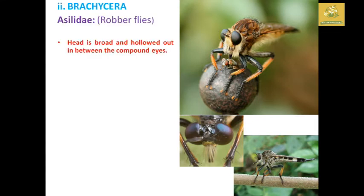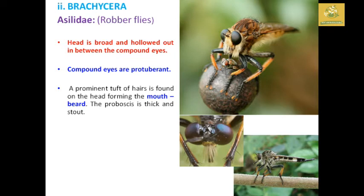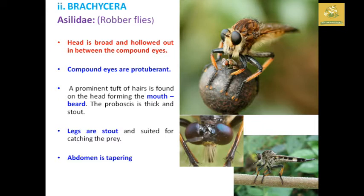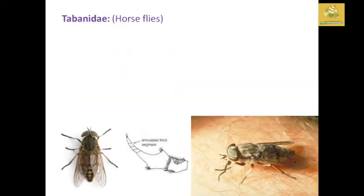In Brachycera, Asilidae are known as robber flies. The head is broad and hollowed out between the compound eyes, which are protuberant. A prominent tuft of bristles is found on the head, forming a mystax beard. The prosternum is thick and stout. Legs are stout and suited for catching prey. The abdomen tapers and they are the most active and non-selective predators.